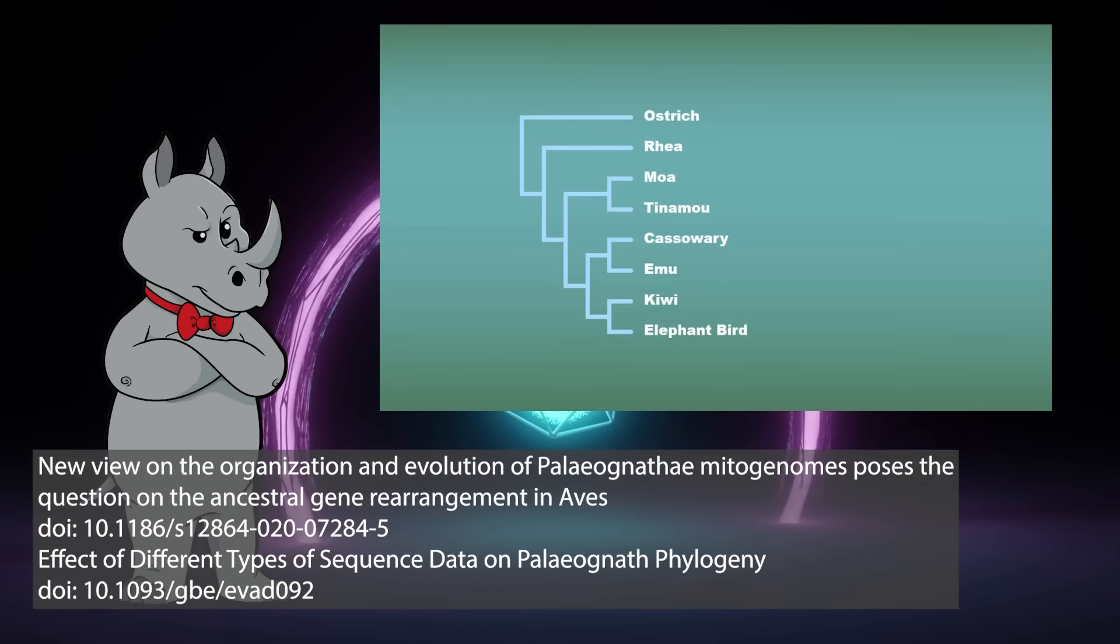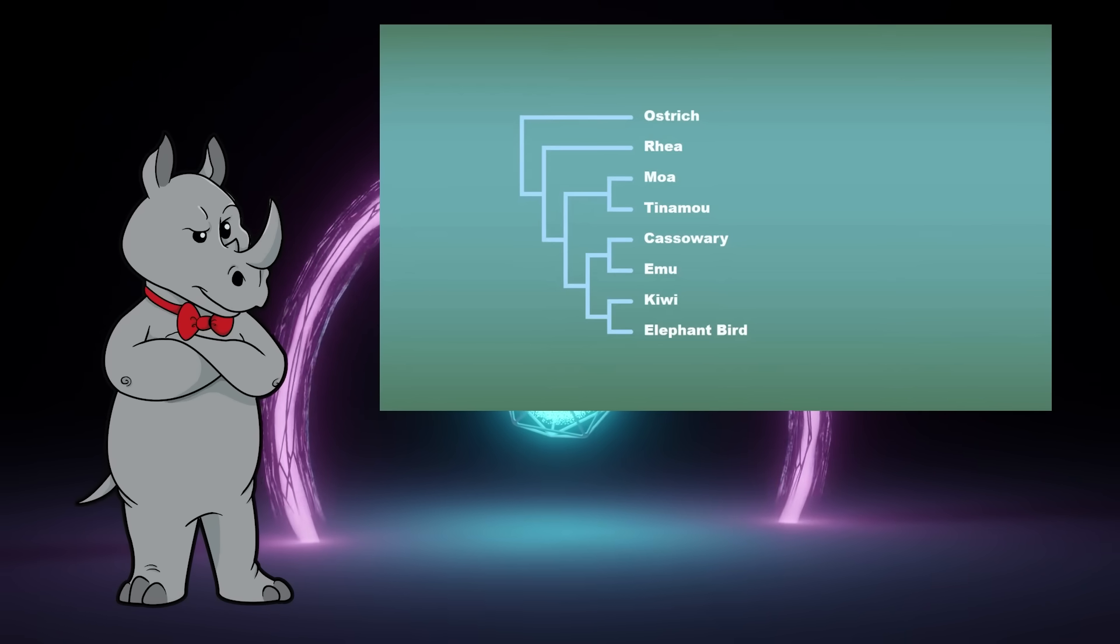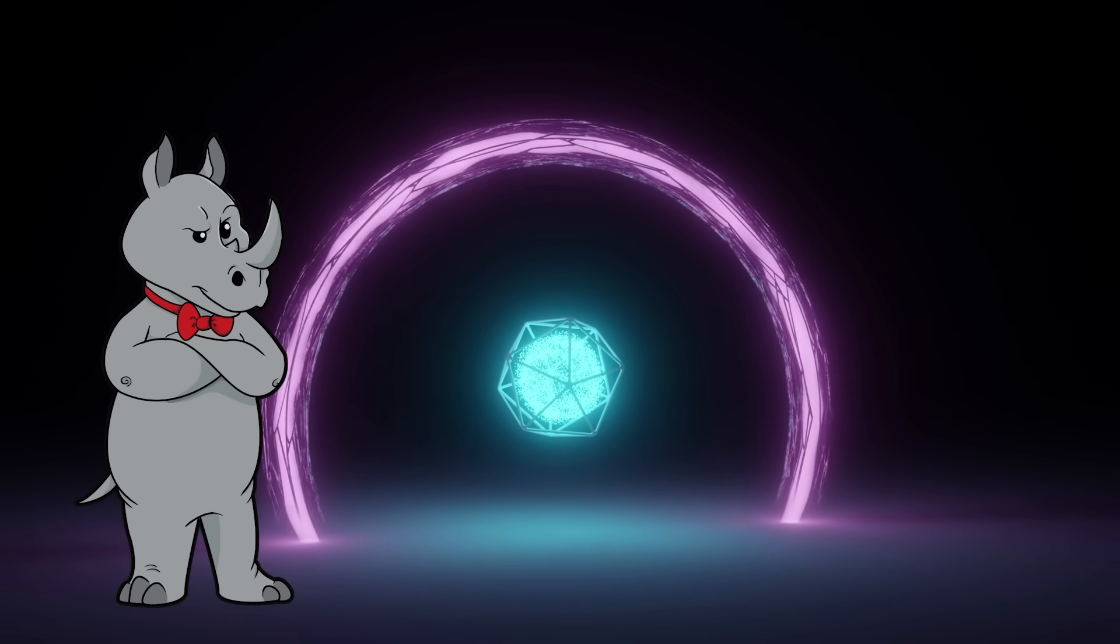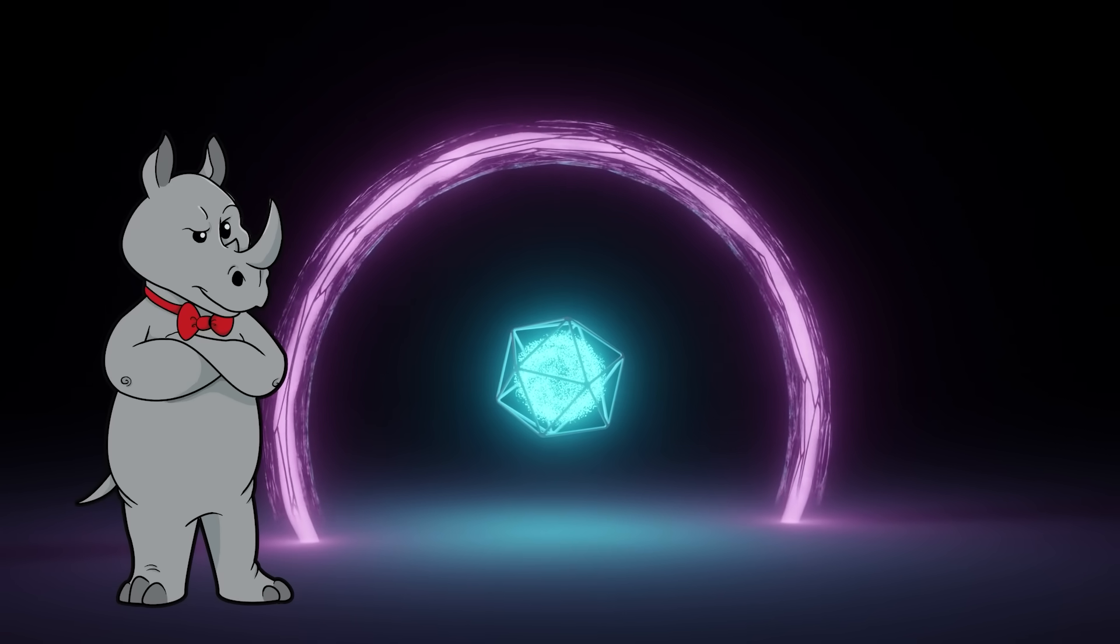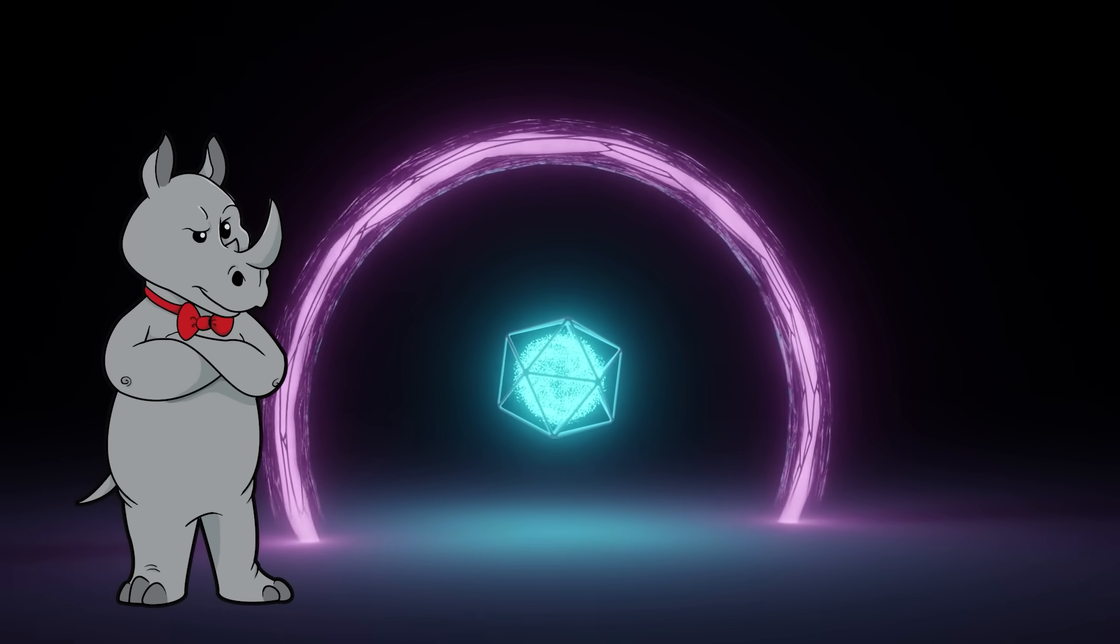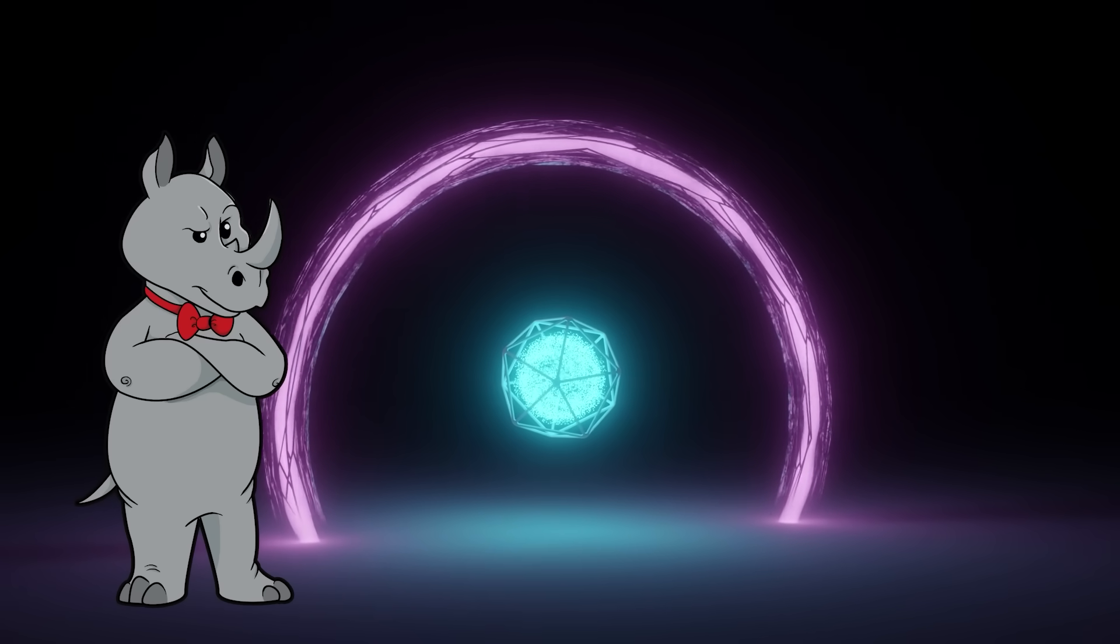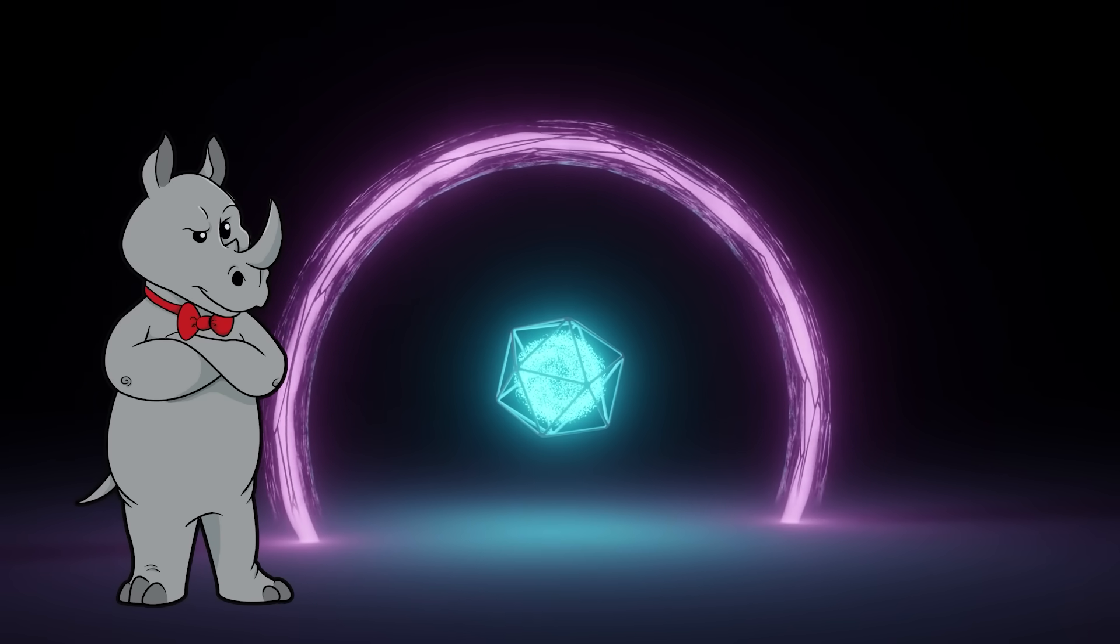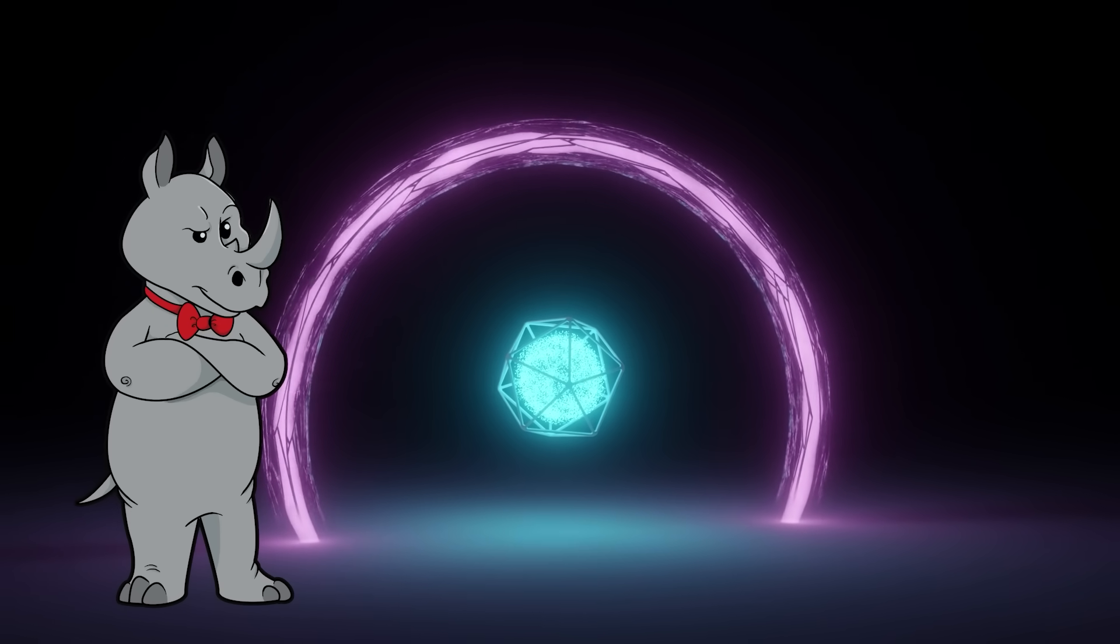The question with regards to the ratites is not did they evolve or were they specially created, and I don't think Todd or indeed pretty much any creationist would disagree with that. They'd say that the ratites were part of the same created kind, so of course they are related to each other. So the only point in bringing this up would be to throw shade on evolutionary methods.